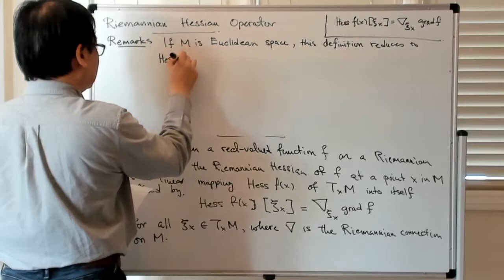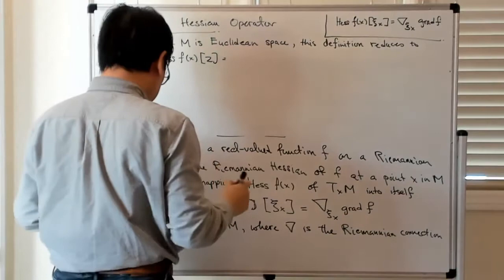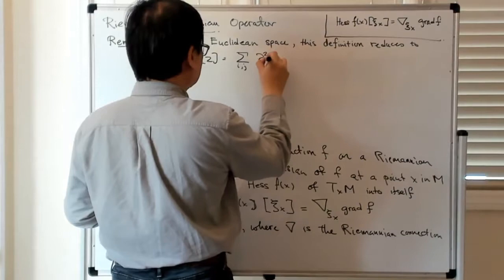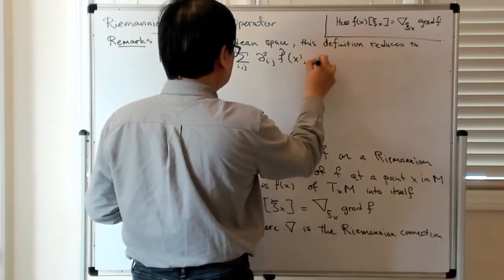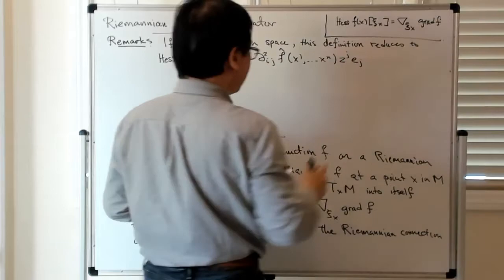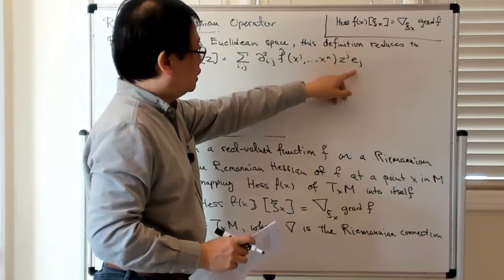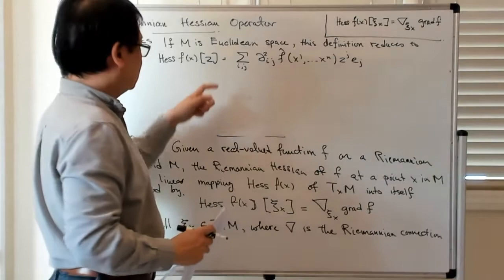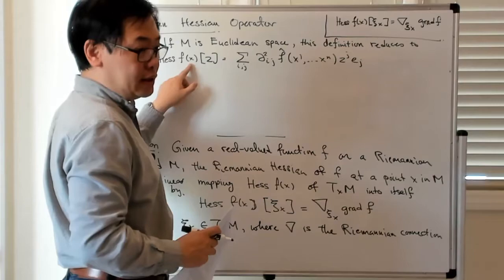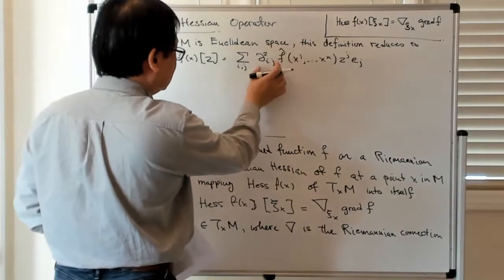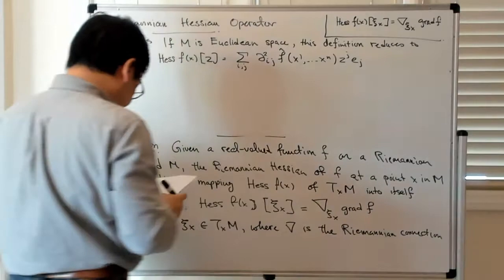which is that if you have Hessian f of x acting on z, this is equal to the sum over i and j of d squared ij f at x1 to xn, zj ej, where of course the ej's give you an orthonormal basis on the Euclidean space, the zj's are the coordinates associated at the point z, and x1 to xn are the coordinates associated with x, and then these are the usual classical mixed partial derivatives.